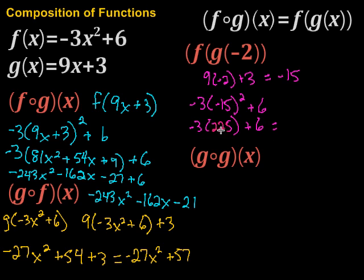Then negative 3 times 225, that would be 675. So it would be negative 675, then plus 6. Add those up, we get negative 669.